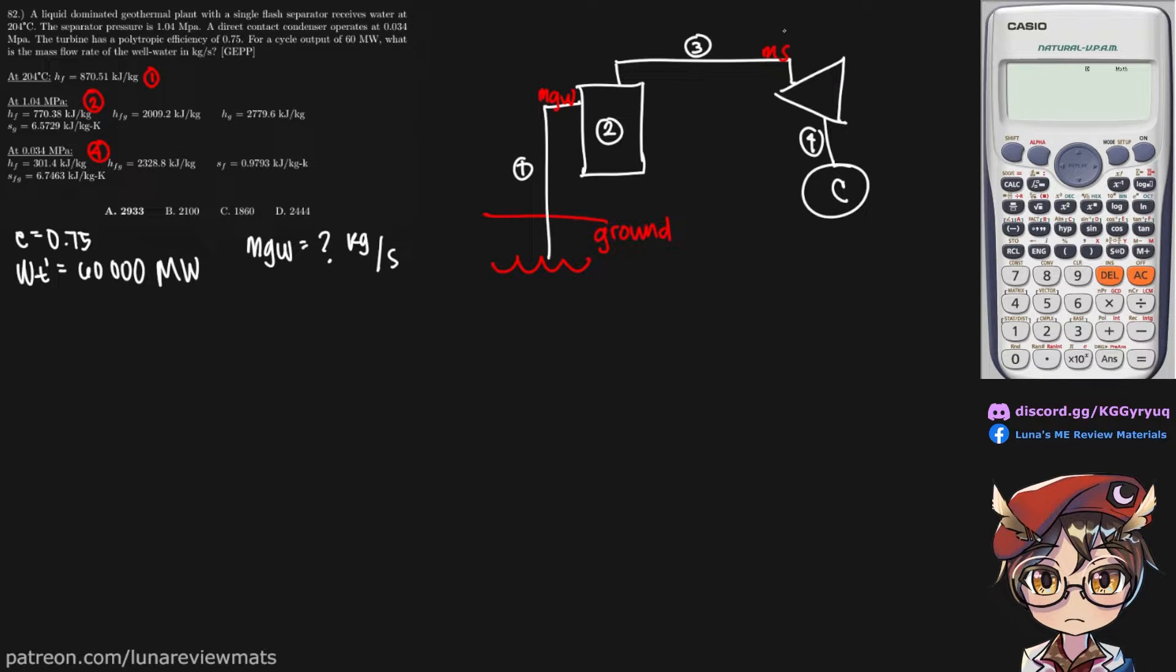Well, we know that the mass of the steam here is a percentage of the ground water. In this case, it's X sub 2. And this is our M_GW. So we do have to find our X sub 2 first.